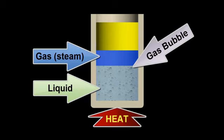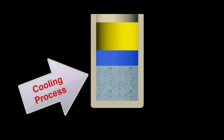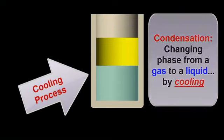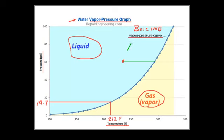In the next step of the animation, I'll turn off the heat to allow the water to cool. Notice that, as this happens, the gas bubbles will return to their liquid state. This process of changing phase from a gas to a liquid by cooling is known as condensation. Going back to the vapor pressure graph, we have just seen the process of causing water to boil by adding heat — a process that is very familiar to us.